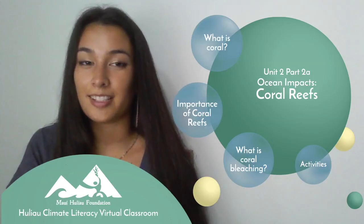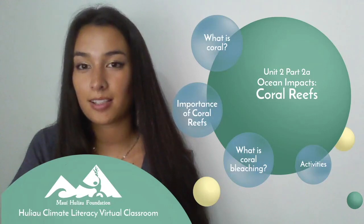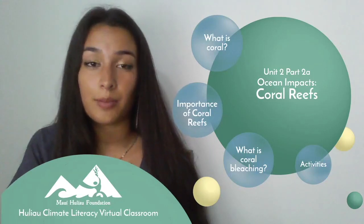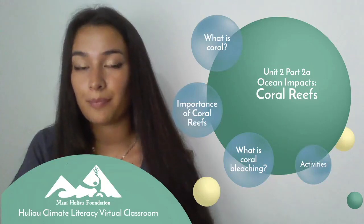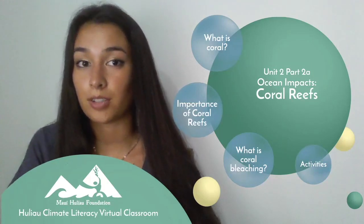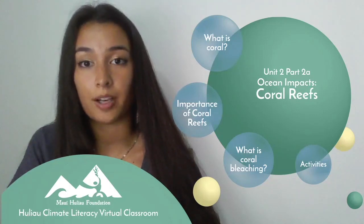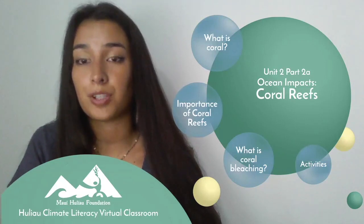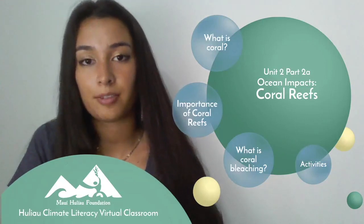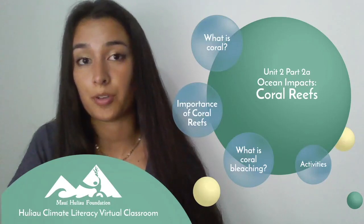Aloha, my name is Sophia and today in Unit 2, Part 2, we will be discussing ocean impacts. The world's oceans make up 71% of the Earth's surface and greatly influence life as we know it today. Although oceans are the world's largest carbon sink, as they continue to absorb more and more carbon dioxide from the atmosphere, they pass a certain threshold and the oceans begin to warm and chemistry changes, impacting marine life. In this first section, we will focus on the impacts of warming sea temperatures on coral reefs and define coral bleaching.